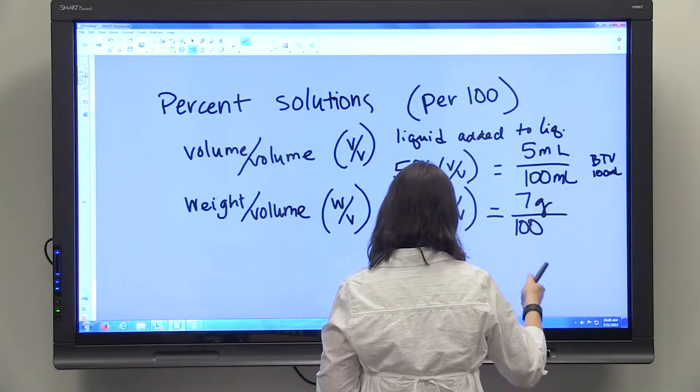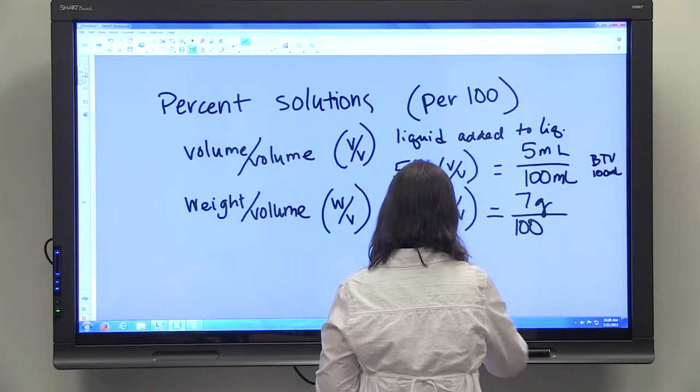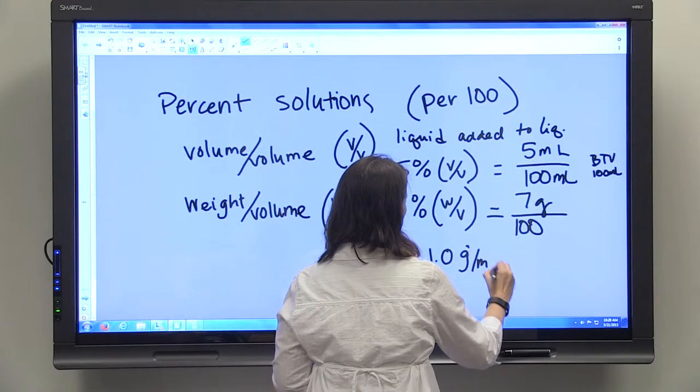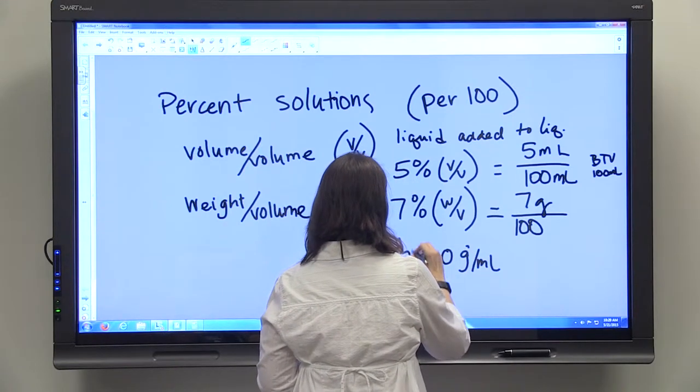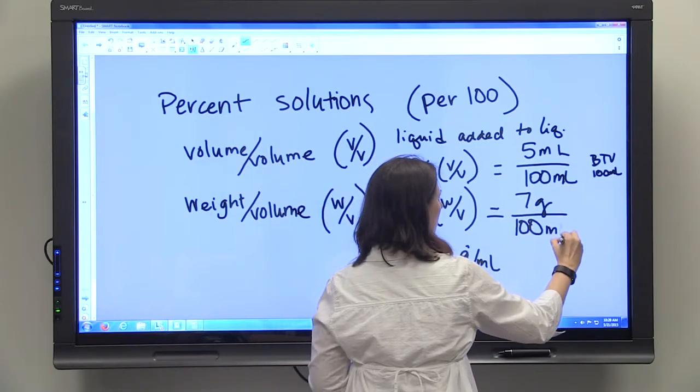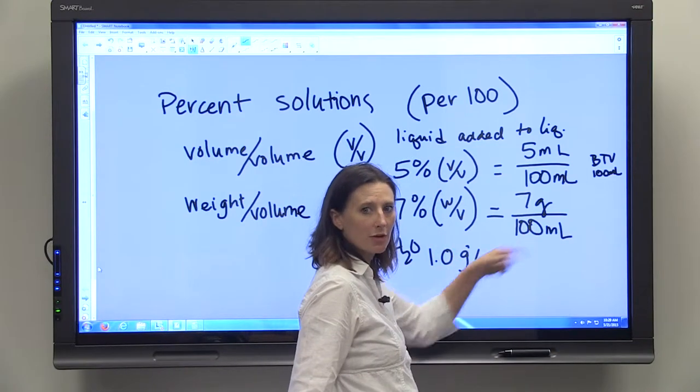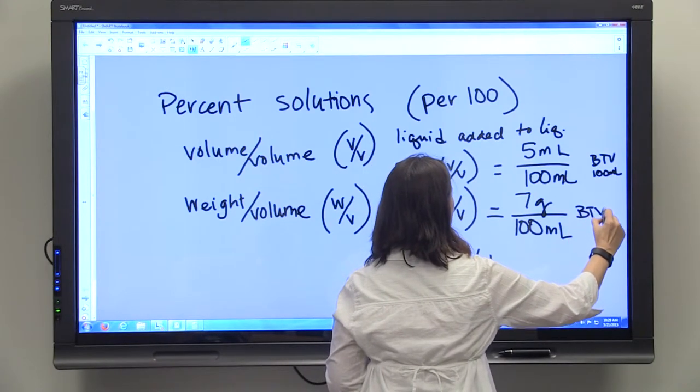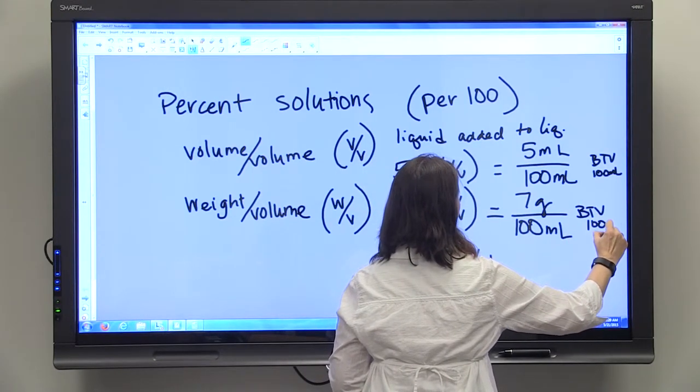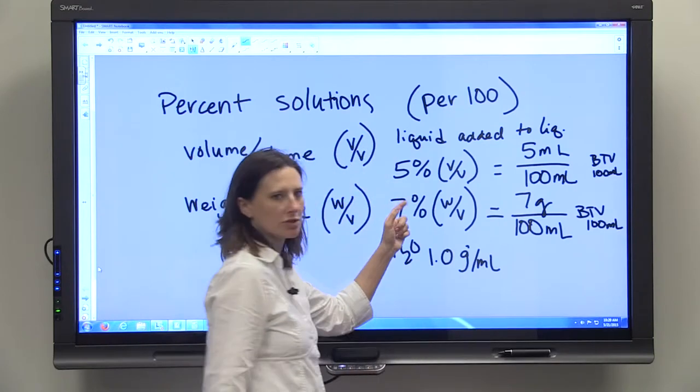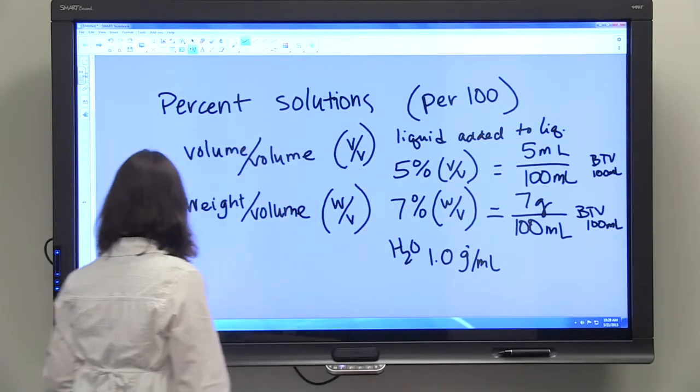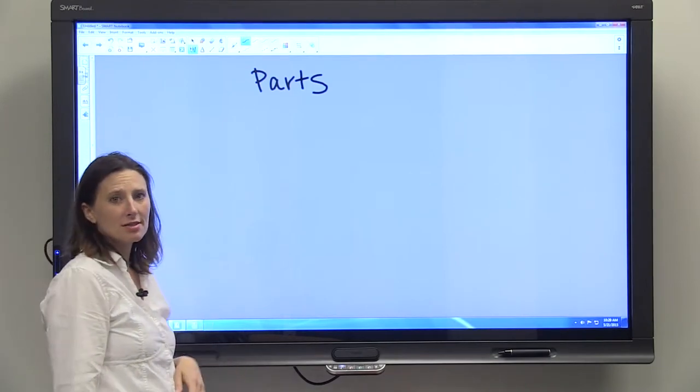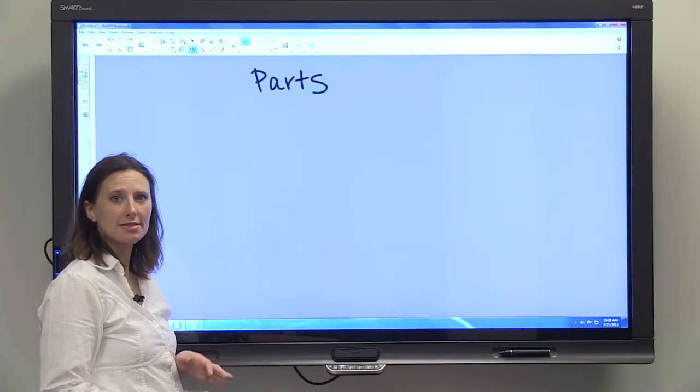100 grams in 100 ml's because it's 1 gram per ml. So you can just say that this is 7 grams in 100 ml's if you're dissolving in water. And again, you bring to a final volume of 100 ml's to get a 7% weight to volume solution. Parts is another way that concentration is expressed with solutions.